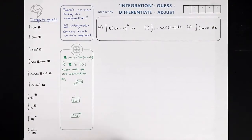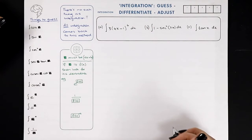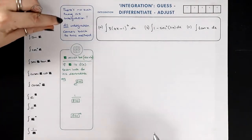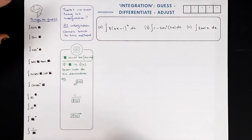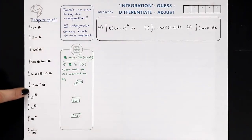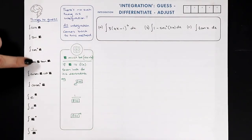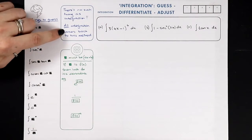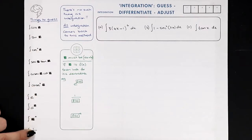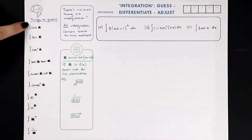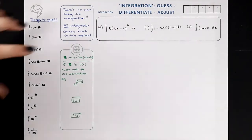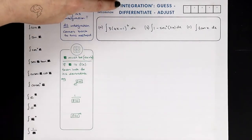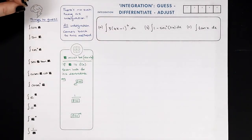Congratulations for watching this video — it is the most important video you are going to watch in the whole of A-level second year. Integration is a very hard topic, but actually not that hard: there are only 10 things we integrate. Literally nothing else. All integration comes back to these ten, and all other integration techniques are about getting you to the point where you can guess what's been differentiated.